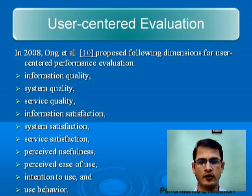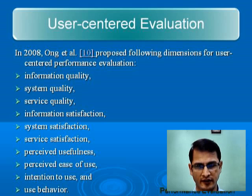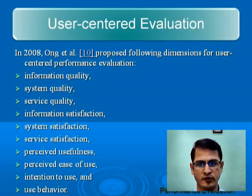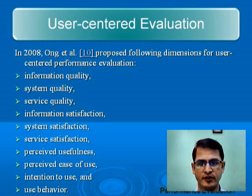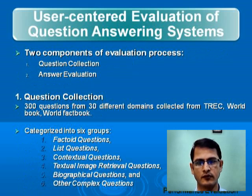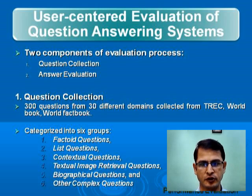User-centered evaluation was not discussed until very recently. In 2008, Ong et al. proposed 12 different dimensions for performance evaluation from the user's point of view: information quality, system quality, service quality, information satisfaction, system satisfaction, service satisfaction, perceived usefulness, perceived ease of use, intention to use, and actual behavior. So I did user-centered evaluation of some question answering systems in two phases: first was question collection, second was answer evaluation.